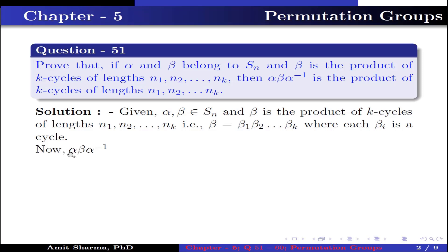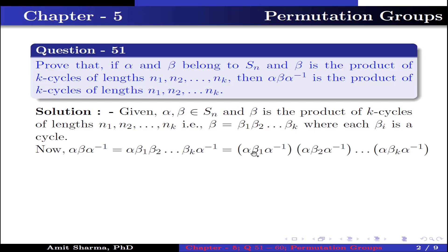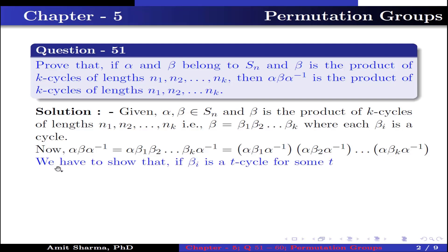We have to find the value of alpha beta alpha-inverse. Substituting the value of beta we get alpha beta_1 beta_2 up to beta_k alpha-inverse, which is further written as alpha beta_1 alpha-inverse times alpha beta_2 alpha-inverse, and so on, times alpha beta_k alpha-inverse. Now we have to show that if each beta_i is a t-cycle, then alpha beta_i alpha-inverse is also a t-cycle.